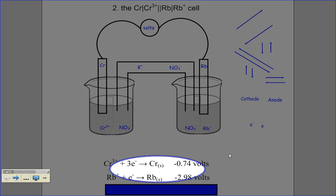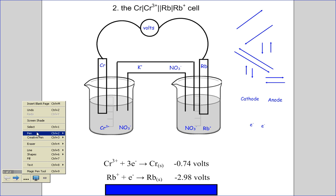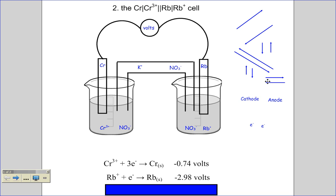The reduction half is the cathode. So if the reduction half is the cathode, that makes the oxidation half, the rubidium, the anode. And electrons always flow from anode to cathode. So I can put in some arrows indicating the direction that the electrons are going to move.